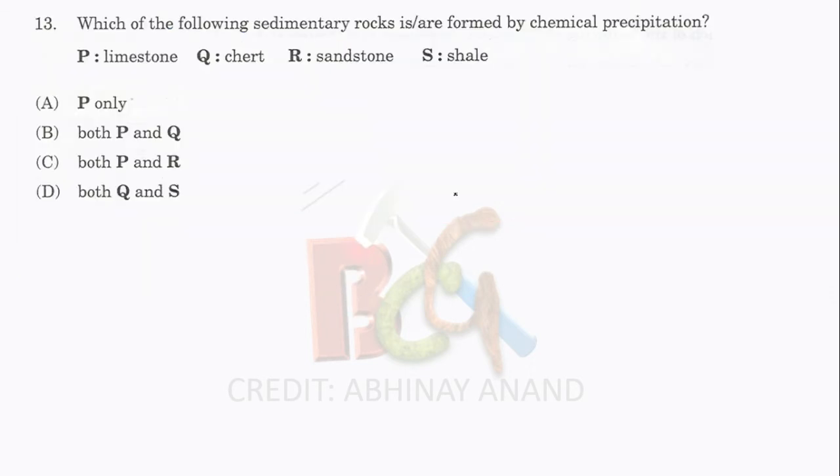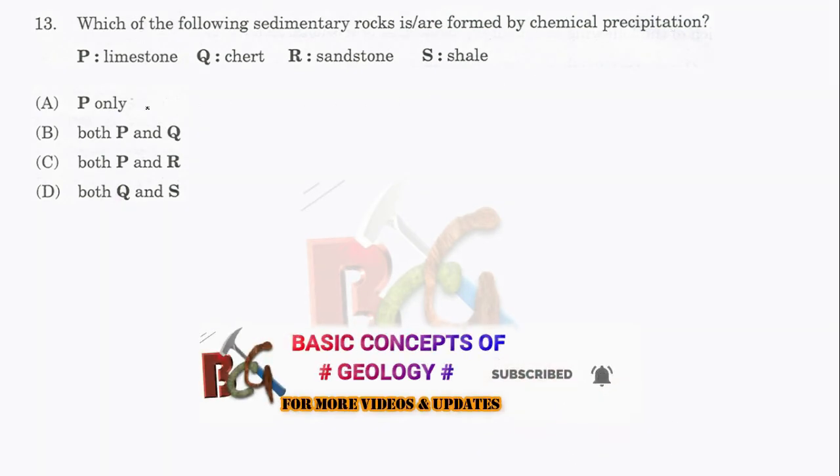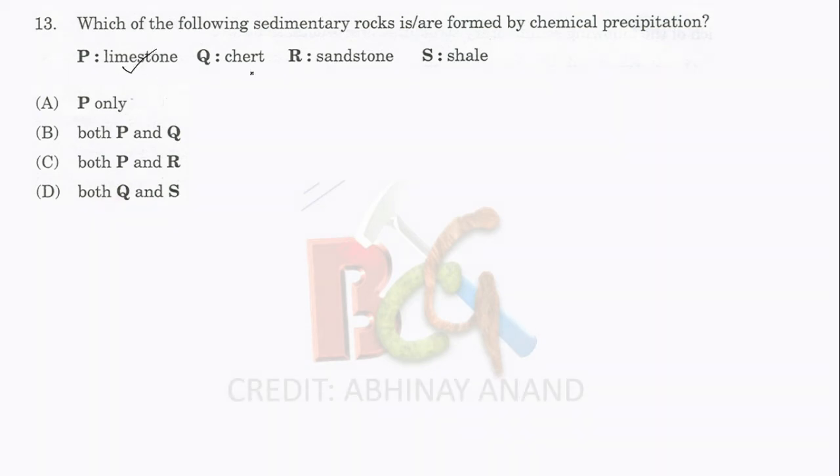Question 13 is very easy: Which of the following sedimentary rocks is formed by chemical precipitation? The answer is chert. Chert is microcrystalline quartz - very fine material of quartz that forms through chemical precipitation during diagenetic processes.